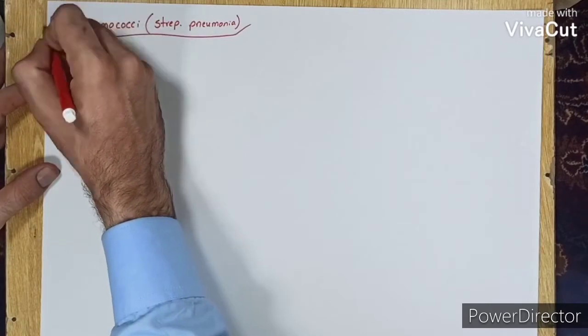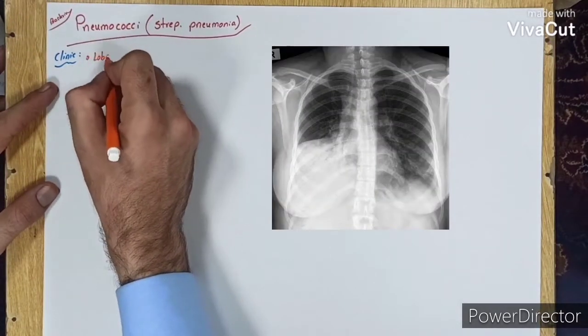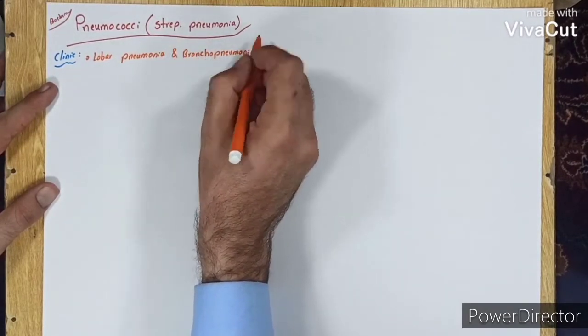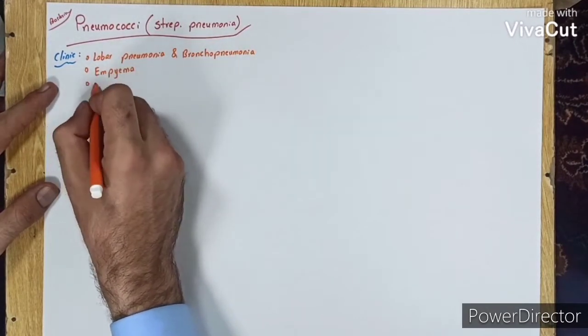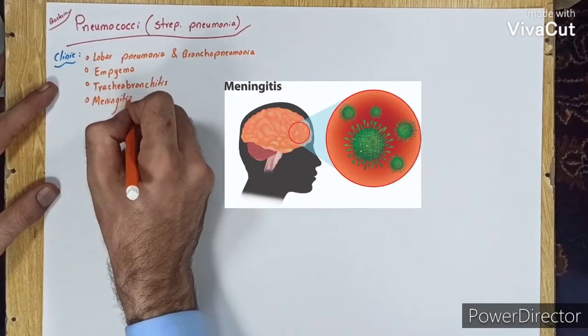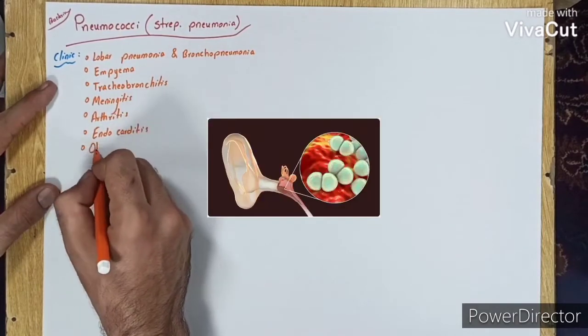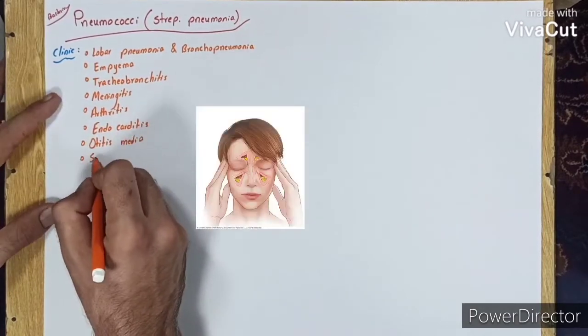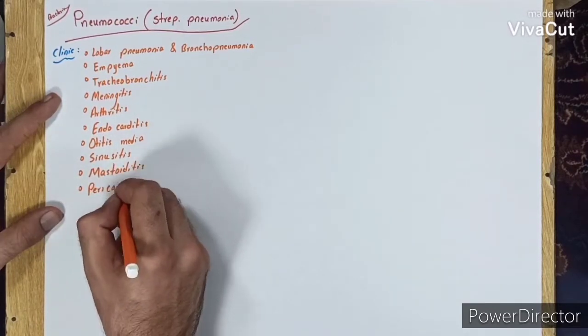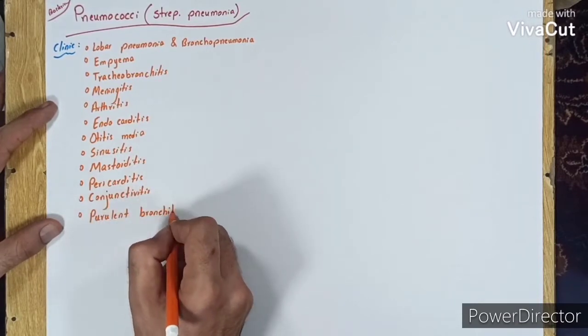In its clinical presentation, there is lobar pneumonia or bronchopneumonia, empyema, tracheobronchitis, meningitis, arthritis, endocarditis, otitis media, sinusitis, mastoiditis, pericarditis, conjunctivitis, and purulent bronchitis.